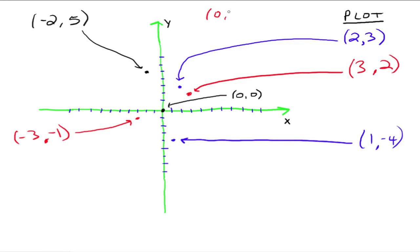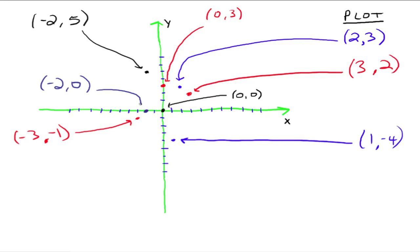What about (0, 3)? The x-coordinate is 0, so you don't go right or left — stay at the origin — and since the y-coordinate is positive 3, go up 3: 1, 2, 3. That point is right there on the y-axis. For (-2, 0): x is negative 2 so go 2 to the left, and y is 0 so you don't go up or down — that's right there on the x-axis. Points on the axes have one coordinate equal to 0.